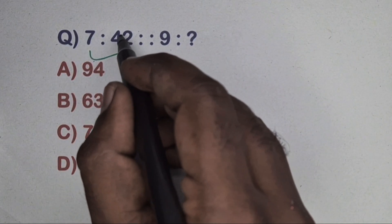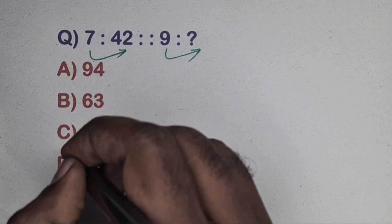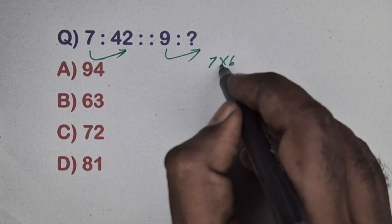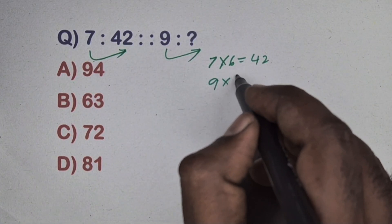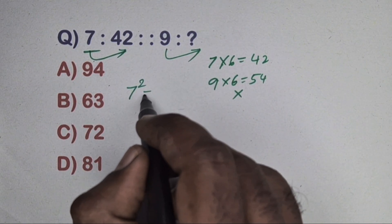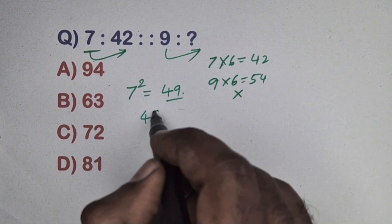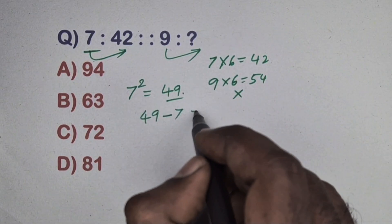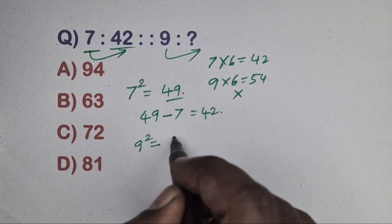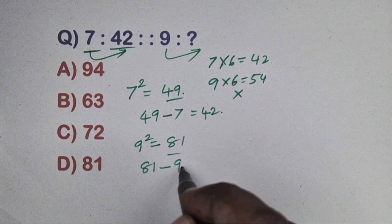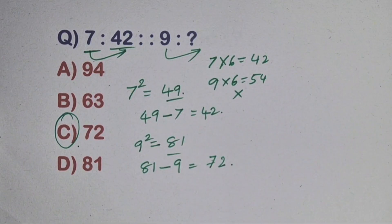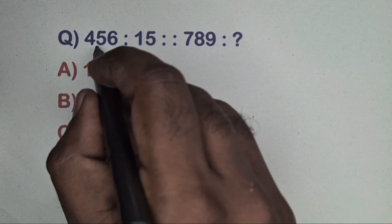Next question: 7 is related to 42 and 9 is related to which number? First try: 7 into 6 equals 42, so 9 into 6 is 54 — but 54 is not in the options. Correct method: 7 squared equals 49, and 49 minus 7 equals 42. Same way, 9 squared equals 81, and 81 minus 9 equals 72. Option C is the correct answer.